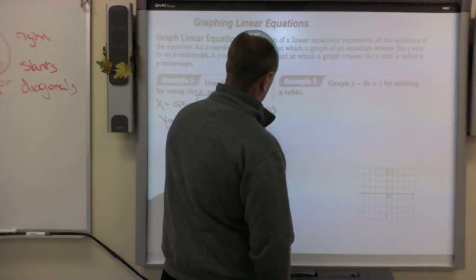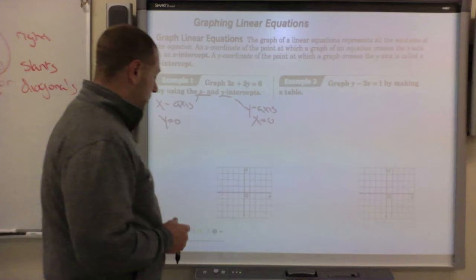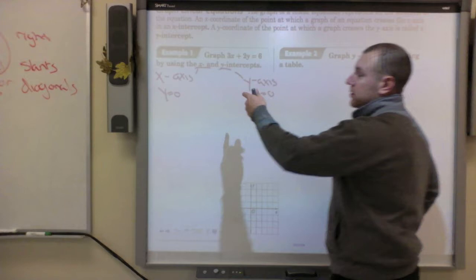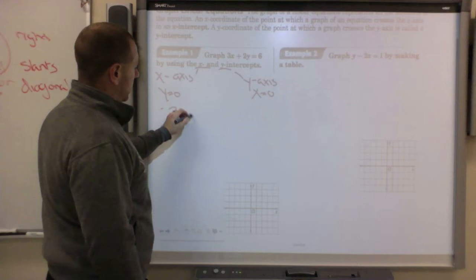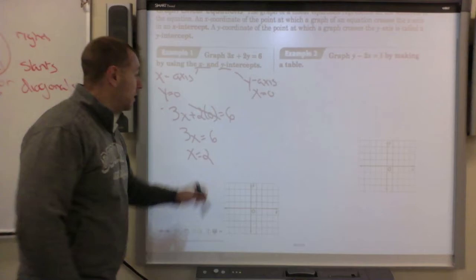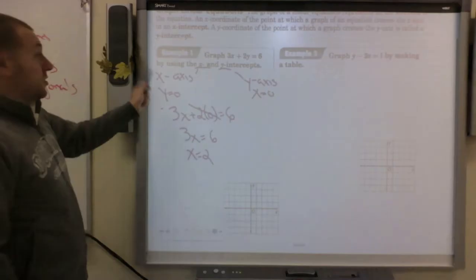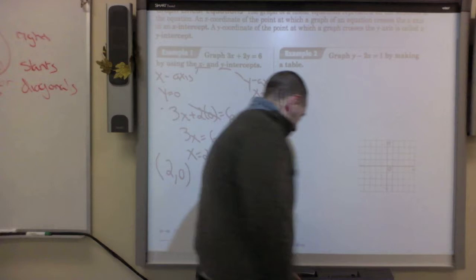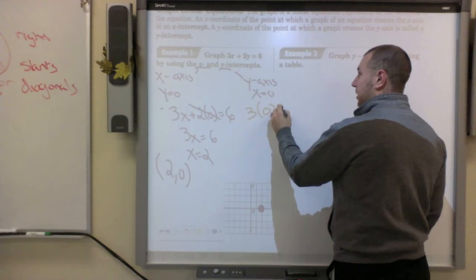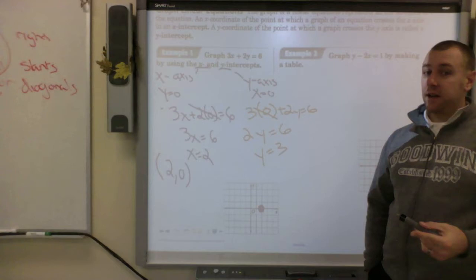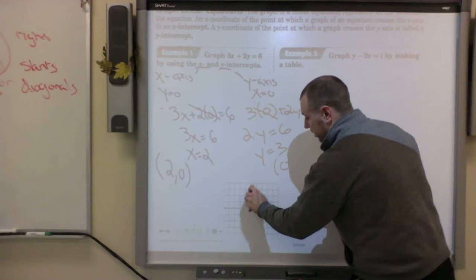To find the x-intercept, plug zero in for y: 3x plus 2 times 0 equals 6. The 2 times 0 cancels, leaving 3x equals 6, so x equals 2. The x-intercept is (2, 0). For the y-intercept, plug zero in for x: 3 times 0 cancels, leaving 2y equals 6, so y equals 3. The y-intercept is (0, 3). Plot both points.